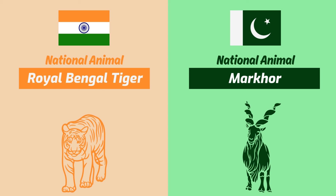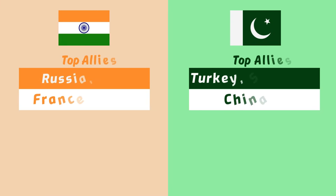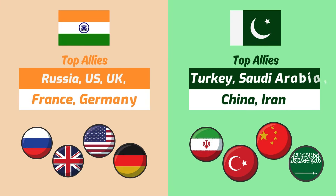The national animal of Pakistan is Markour while the national animal of India is the Royal Bengal Tiger. The top allies of Pakistan are Turkey, Saudi Arabia, China and Iran, while the top allies of India are USA, UK, Russia and Germany.